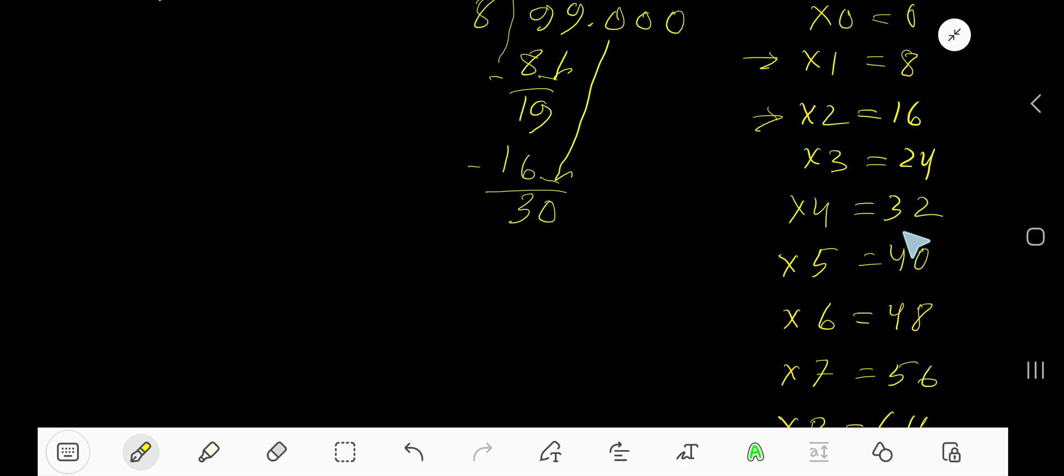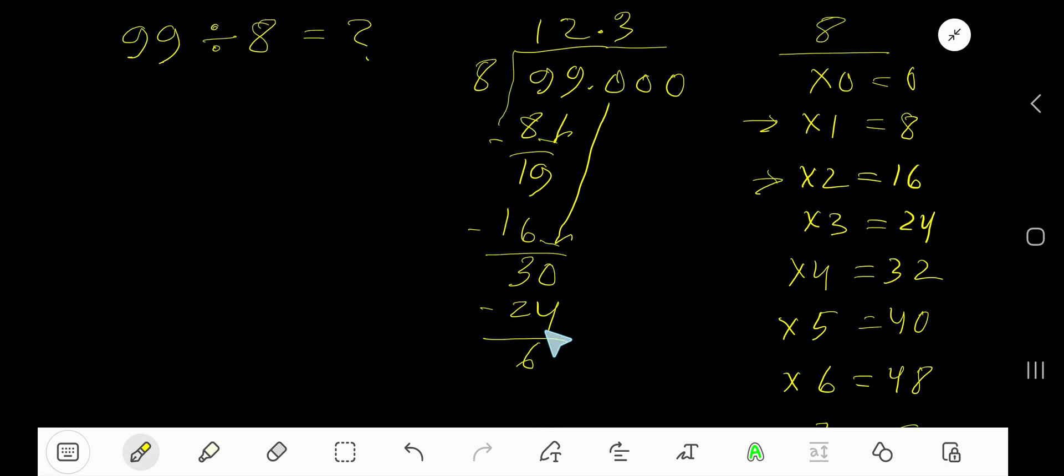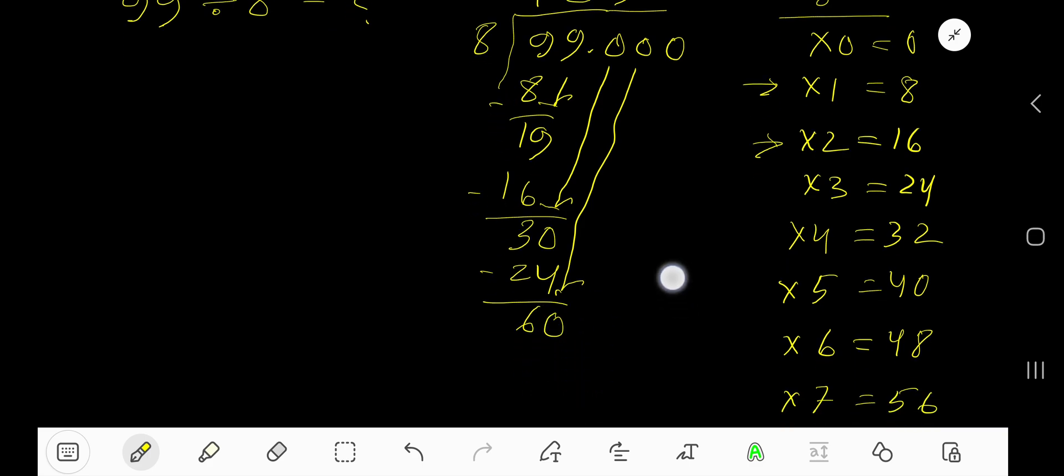8 times 4 is 32, which is greater, so 3 times 24. Write 3. 3 times 8 is 24. Subtract, you get 6. Bring down the next 0. Now you have 60. 8 goes into 60 how many times?